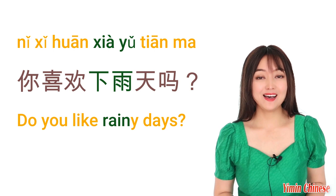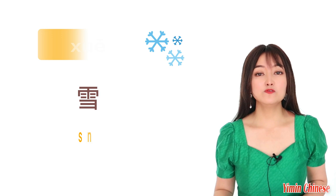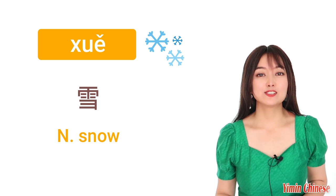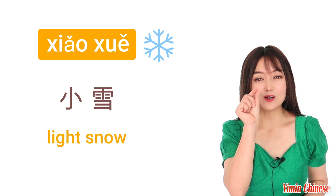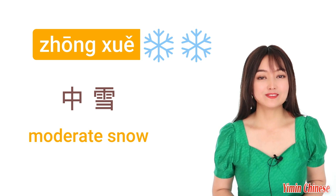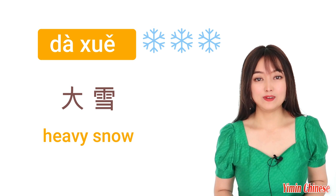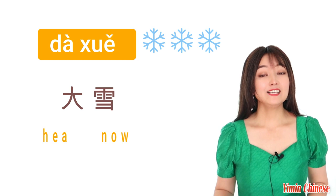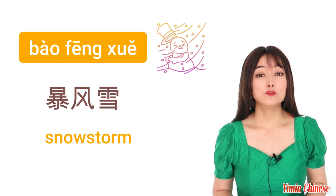Okay, now snowing days. The noun for snow is 雪。Again, like the rain, according to the intensity we have 小雪 (little snow), 中雪 (moderate snow，中等的雪，不大也不小), 大雪 (heavy snow，很大的雪), and we have 暴风雪，it's a snowstorm.